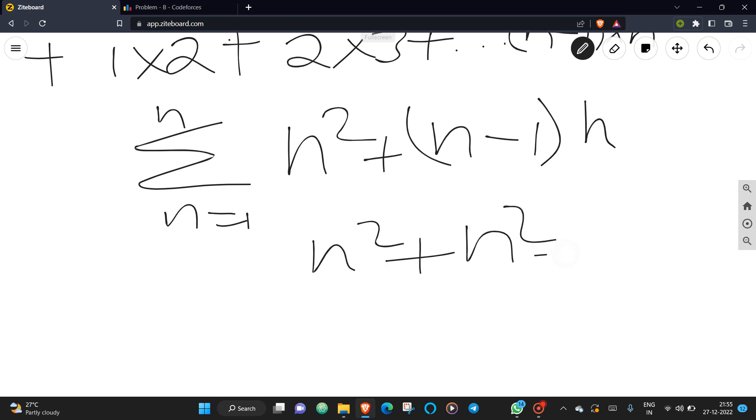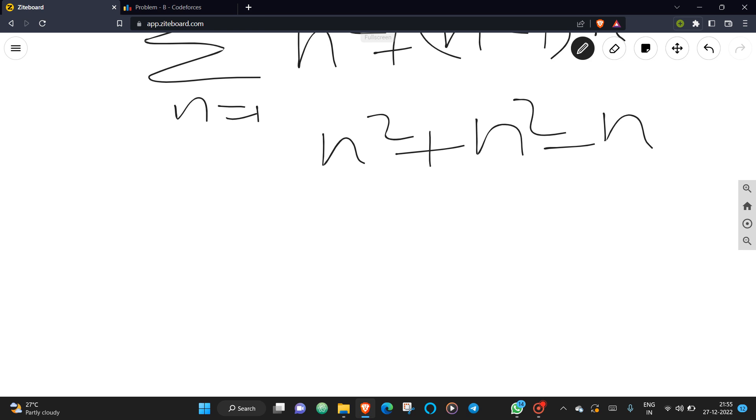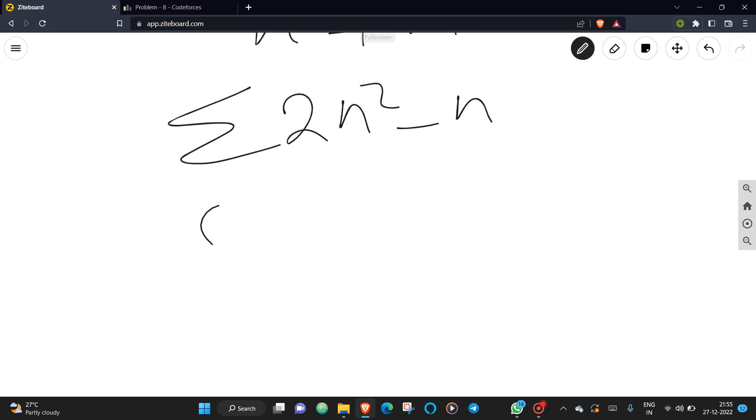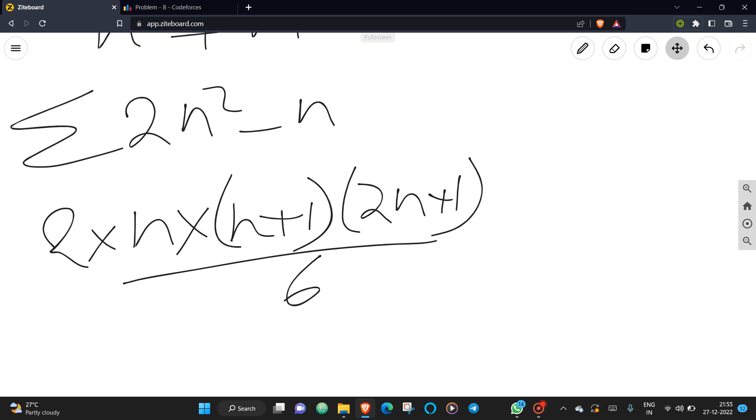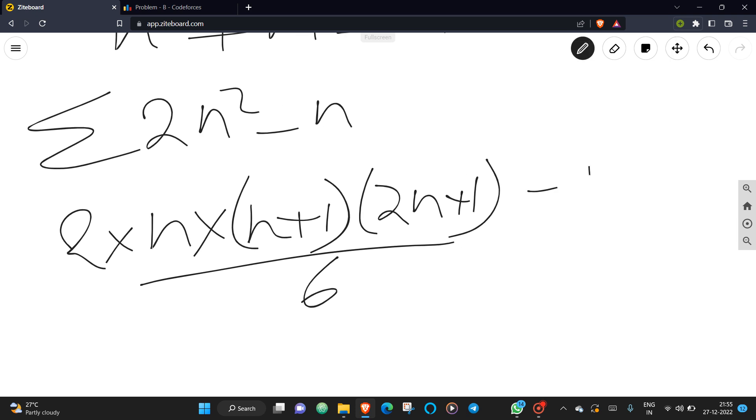Then you get 2n² minus n. If you expand this formula, you get 2 times n times (n+1) times (2n+1) divided by 6, minus n times (n+1) divided by 2.